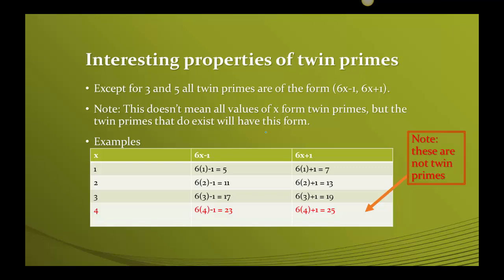Let's talk about something interesting about twin primes. Except for 3 and 5, they don't fit into this. All the other twin primes turn out to be of the form 6x minus 1 and 6x plus 1. So what does that mean? Let's look at the chart. See down here where I have 1, I did 6x minus 1. So 6 times 1 minus 1 is 5, and if I do 6 times 1 plus 1, I get 7, and 5 and 7 are twin primes.